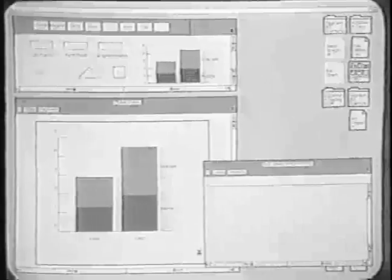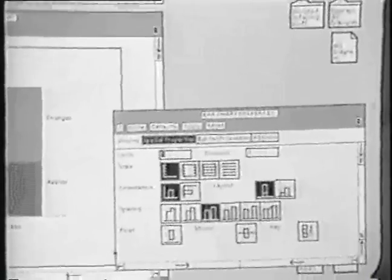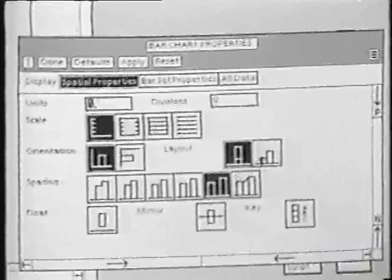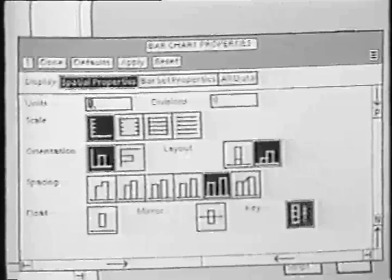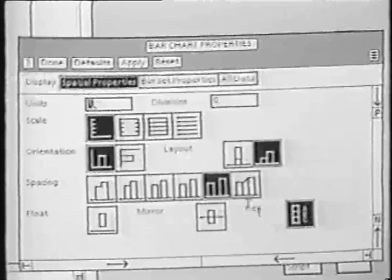Then we can alter the appearance of the bar chart by hitting the properties key to bring up the bar chart property sheet. We can make the bars farther apart, make them side-by-side instead of stacked, and turn on the key, which is a legend which appears in the upper right-hand corner of the bar chart. Hit apply to start these properties working.